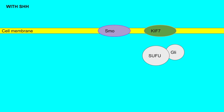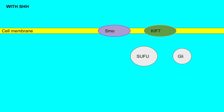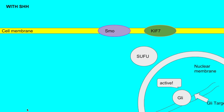With this active smoothened, it then works in conjunction with another cell membrane protein called KIF-7 in order to separate the SUFU and GLI complexes such that GLI is free. GLI, as a transcription factor, is now able to do its job and enter into the nuclear membrane and activate its targets.